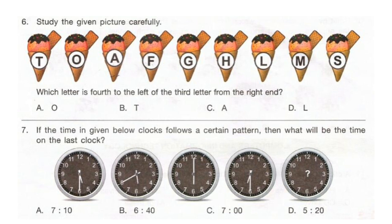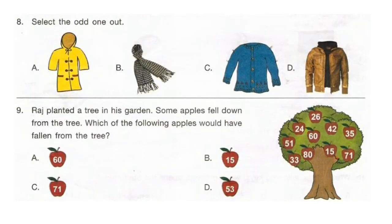The answer is 6:40. Here the first clock shows 5:30, the second is 5:40, the third clock shows 6:00, and the fourth shows 6:30. So after 6:30, 6:40 will come. Question 8: Select the odd one out. The correct answer is option B.